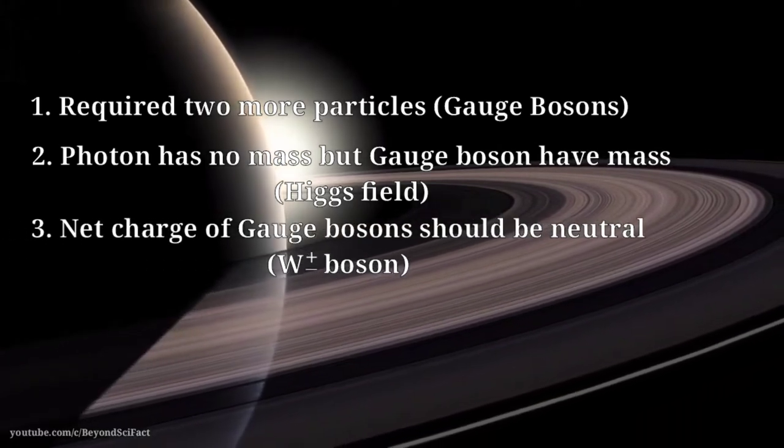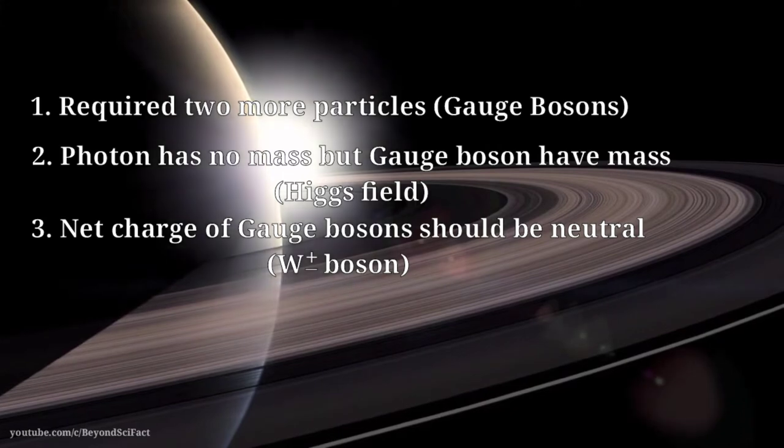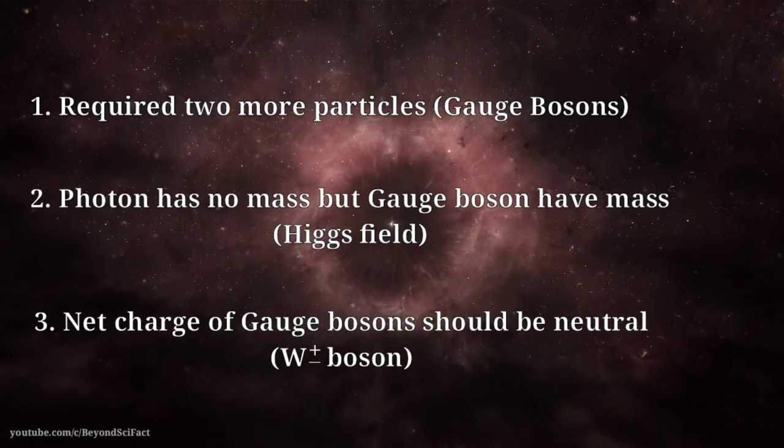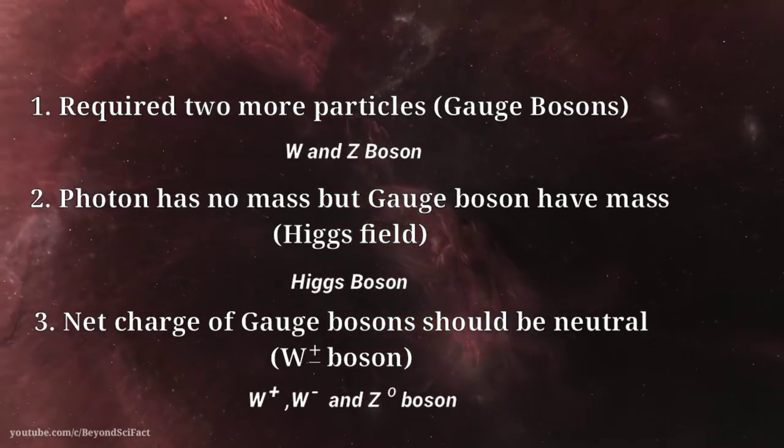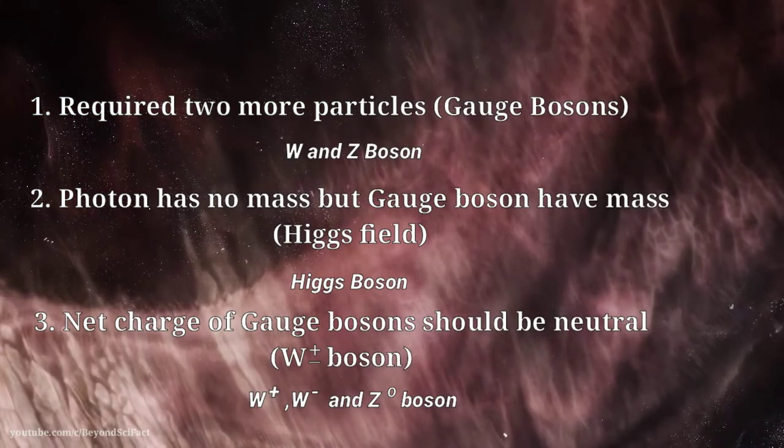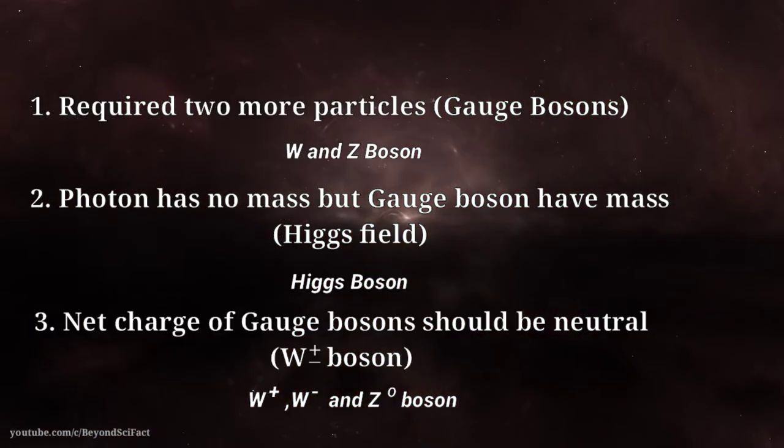Third, the photon has no charge, so gauge bosons should also be in a neutral state. Let me explain these problems one by one. For the need of two particles, they introduced the W and Z boson. Second, they took the help of the Higgs mechanism, which explains the distribution of mass among particles.